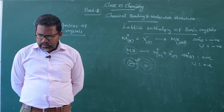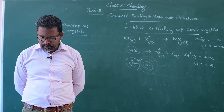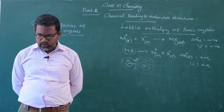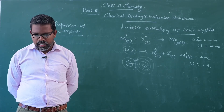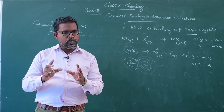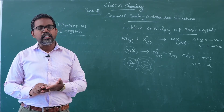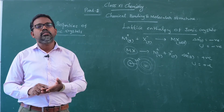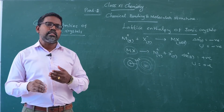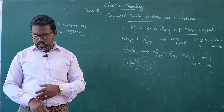The second factor is the charge of the ions. Larger the magnitude of charge of the ions, greater will be the attractive force between them. Consequently, the lattice enthalpy is also high. So, in summary, smaller size and higher charge of the ion — atoms or ions satisfying such conditions show high lattice enthalpy.